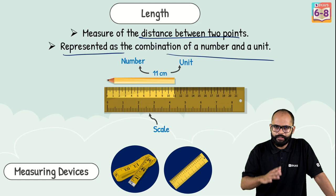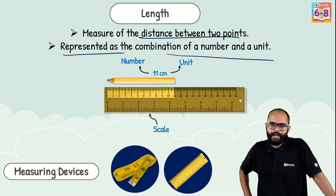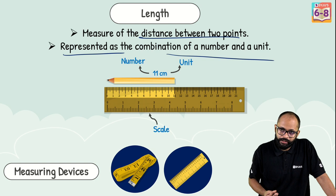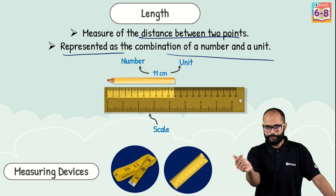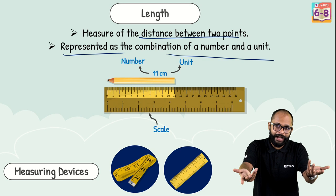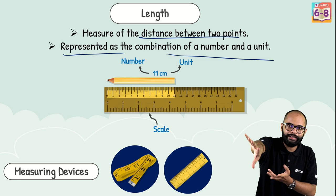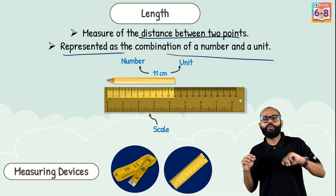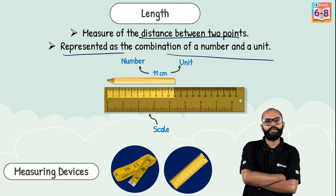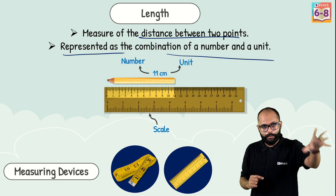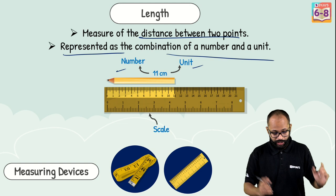For example, if I say my height is 178, that alone means nothing — 178 meters? centimeters? millimeters? I need to say 178 centimeters. The number tells you how much, and the unit tells you in what unit. Together they give complete information. So number plus unit gives you complete information about a measurement.